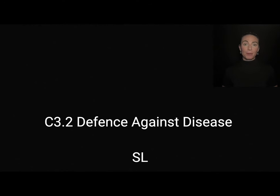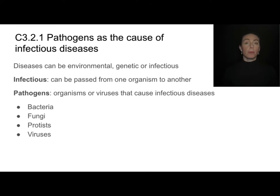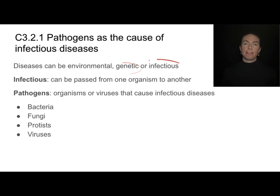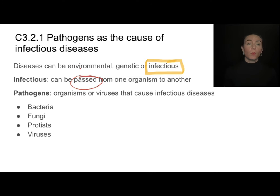This is the video for the standard level portion of C3.2 on Defense Against Diseases. Disease is a broad term — it could be from environmental causes, genetic causes, or infectious causes. In this video, we're going to be focusing mainly on infectious diseases, which are diseases that can be passed from one organism to another. That passing from one organism to the next is the key term here.